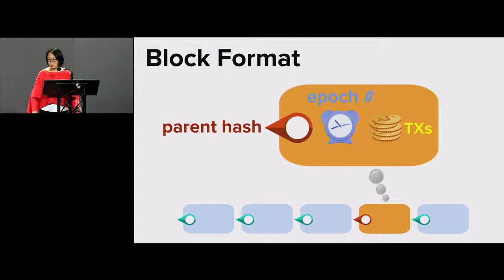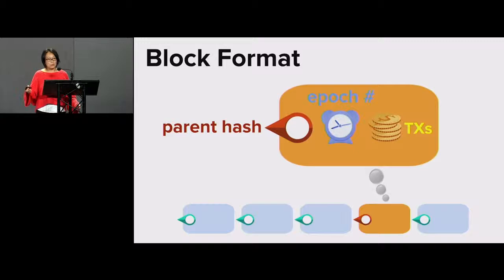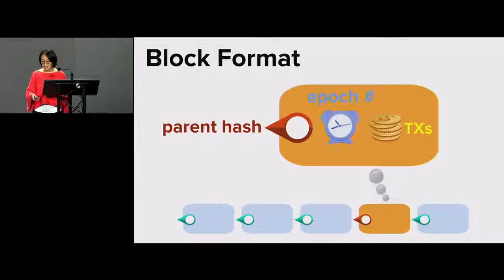How do we construct a blockchain protocol? Before I discuss the protocol, I want to set up what I mean by a block. A block contains a pointer to the previous block called the parent's hash. The parent's hash binds not only to the parent but also to the entire prefix of the chain, just like in Bitcoin or Ethereum. There's a timestamp called an epoch — imagine an epoch is like a second. We want to confirm one block every second in the ideal case. I assume a synchronous network, meaning whenever an honest node sends a message, it arrives at all other honest nodes in about a quarter of a second. The block also includes the transactions it wants to confirm.